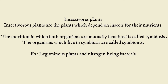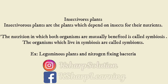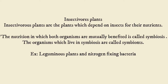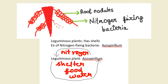Insectivorous plants are plants which depend on insects for nutrients. Symbiosis is the relationship in which both organisms are mutually benefited. The organisms living in symbiosis are called symbionts. For example, leguminous plants and nitrogen-fixing bacteria. Here is a picture demonstrating symbiosis — look carefully.